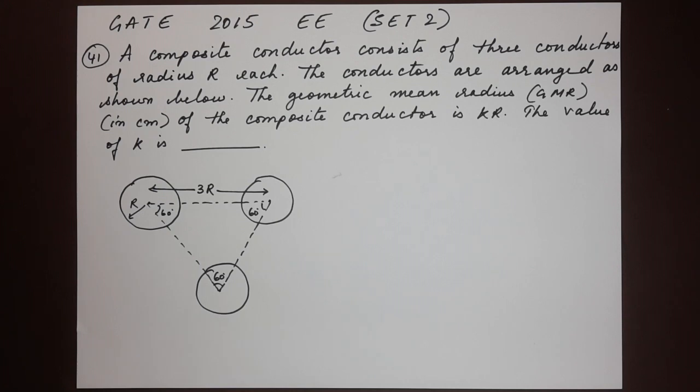A composite conductor consists of three conductors of radius r each. The conductors are arranged as shown below. The geometric mean radius GMR in centimeters of the composite conductor is kr. The value of k is dash.